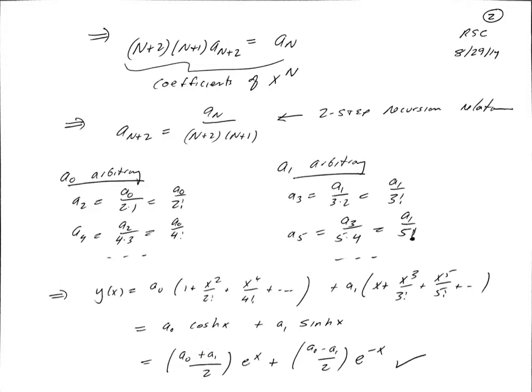The hyperbolic cosine is just e to the x plus e to the minus x over 2. So we can rewrite these as two coefficients, (a₀ + a₁) over 2 times e to the x, (a₀ - a₁) over 2 e to the minus x. So that just recovers what we knew to be the solution. We knew the solution was a combination of e to the x and e to the minus x.